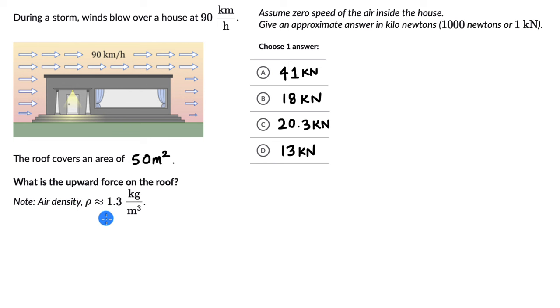We are given the air density and we are asked to assume zero speed of the air inside the house. We can also express the answer in kilonewtons. Before I work this out, why don't you pause the video and give this one a try.